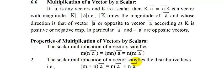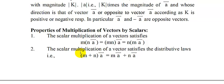Now let's see the properties. Suppose we have two scalars m and n which we multiply with the vector a. The first property is that the scalar multiplication of a vector satisfies: m times (n times a) equals (m times n) times a, which equals n times (m times a).